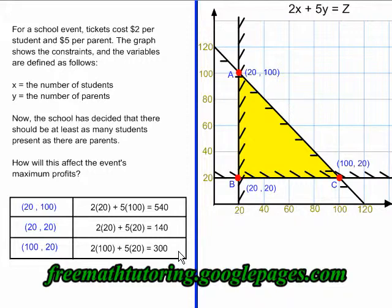If this problem was complete, I would have my answer now. Since we're trying to maximize profits, I picked the largest number. $540 would be the maximum profit, and it would be earned by selling 20 tickets to students and 100 tickets to parents.